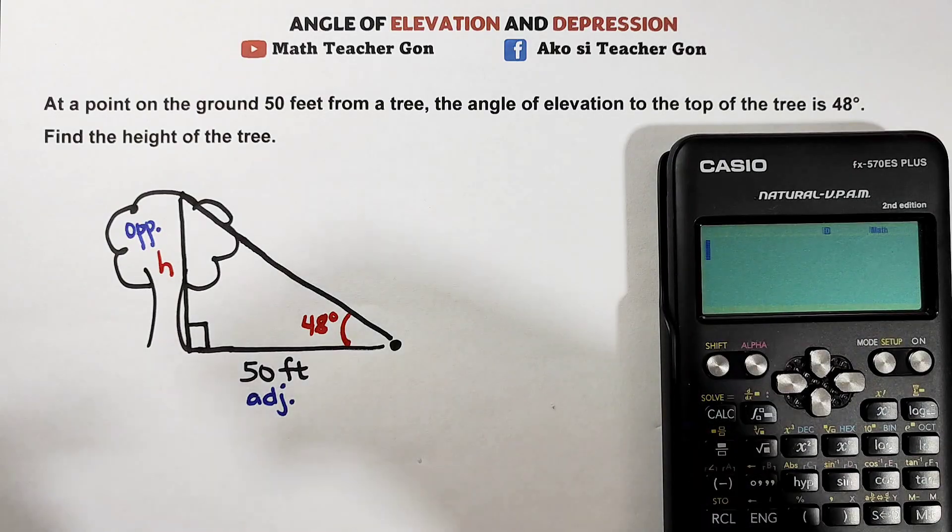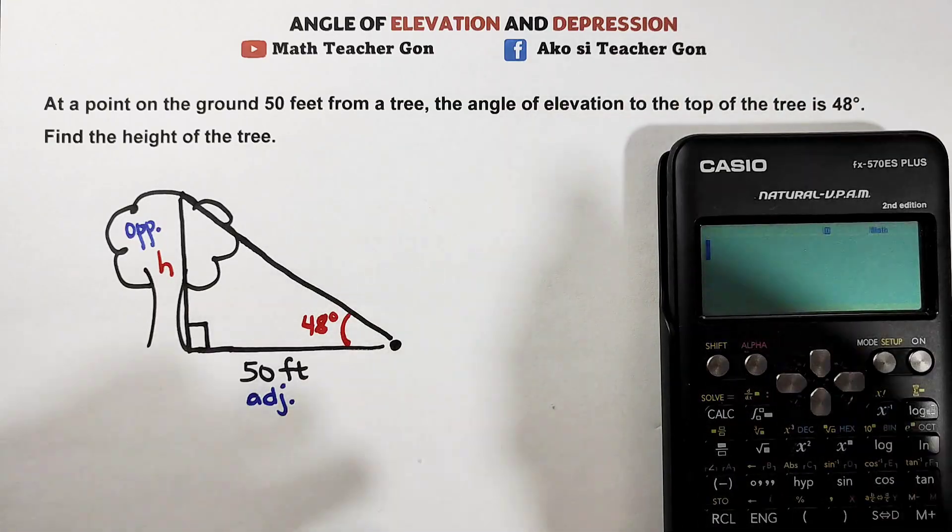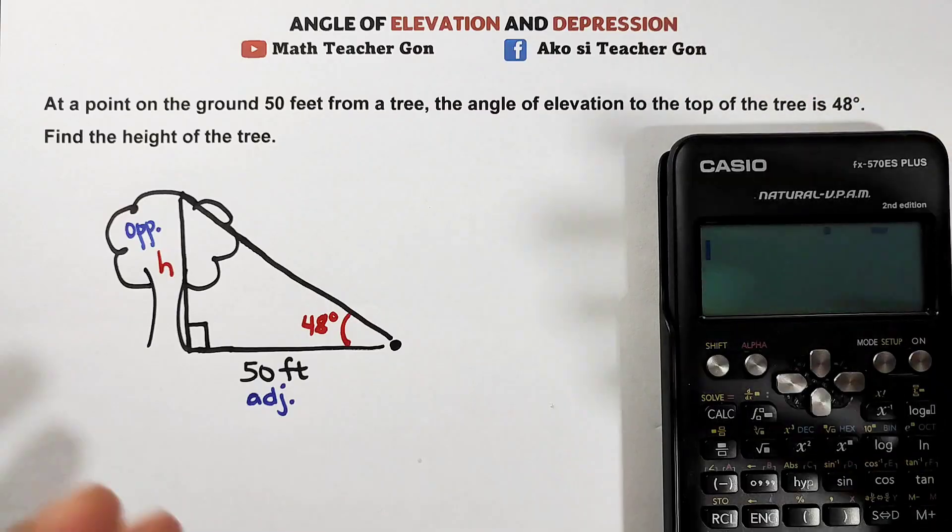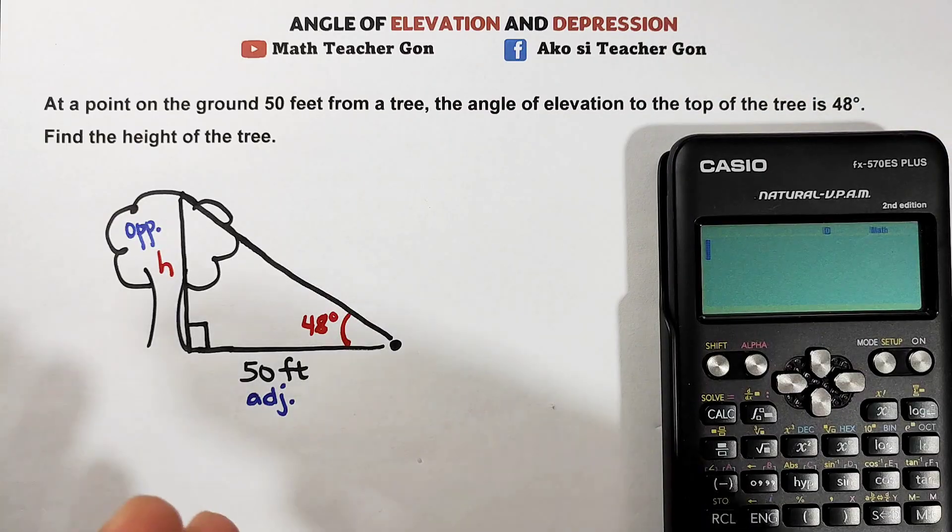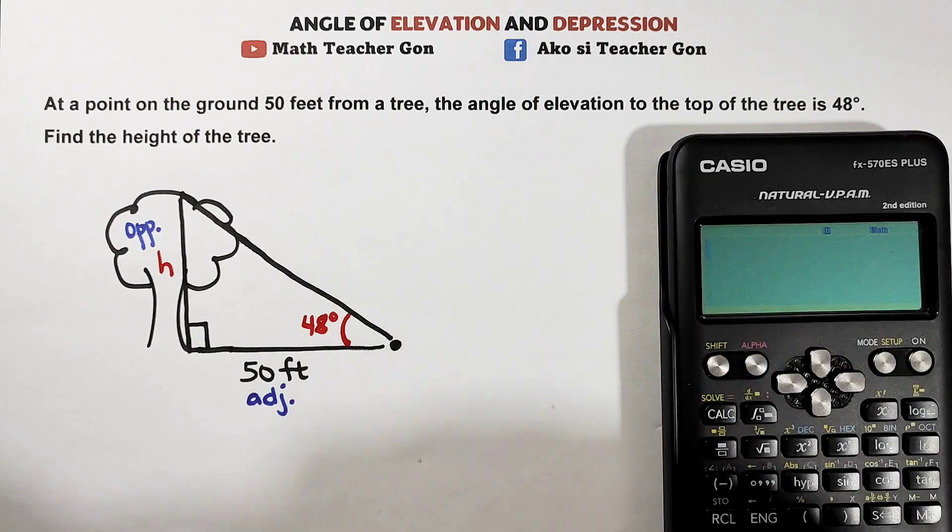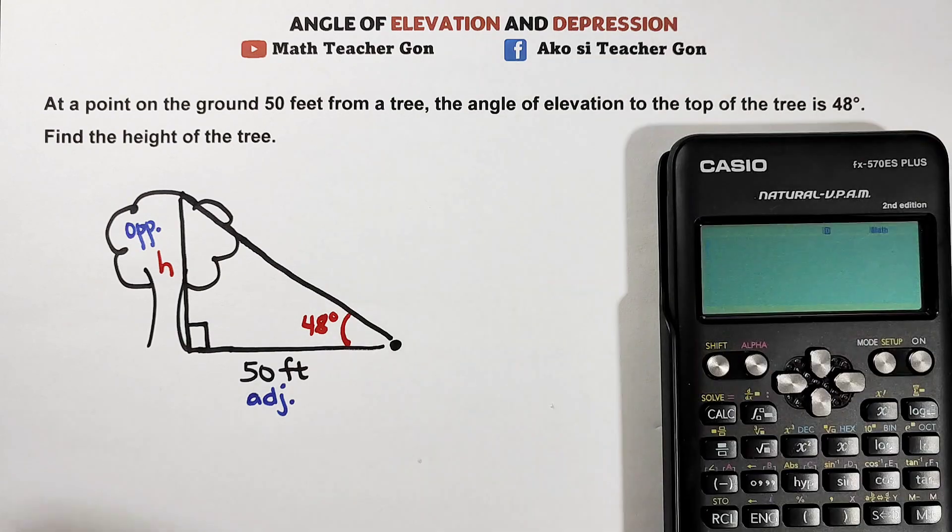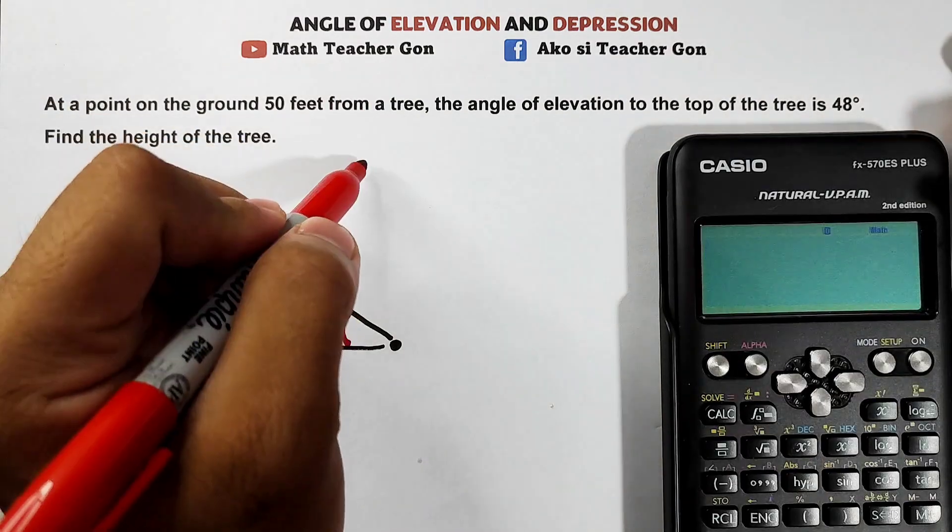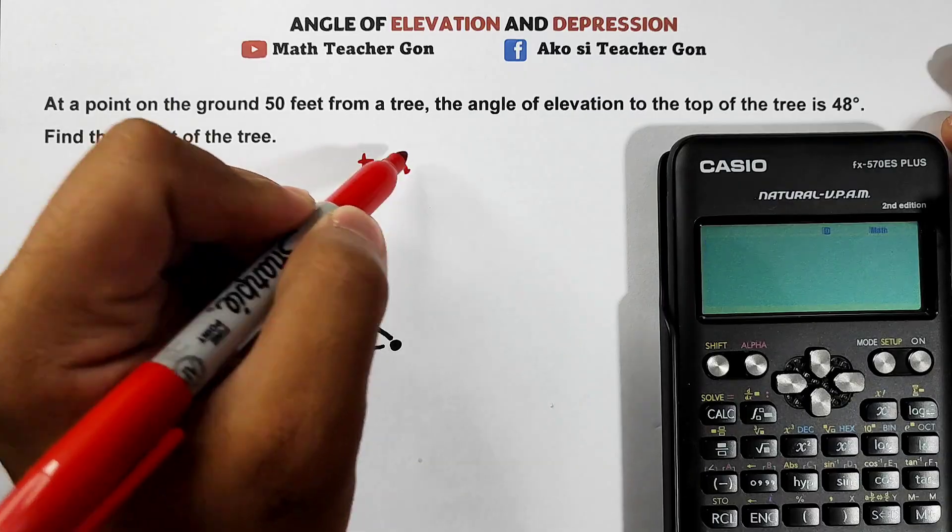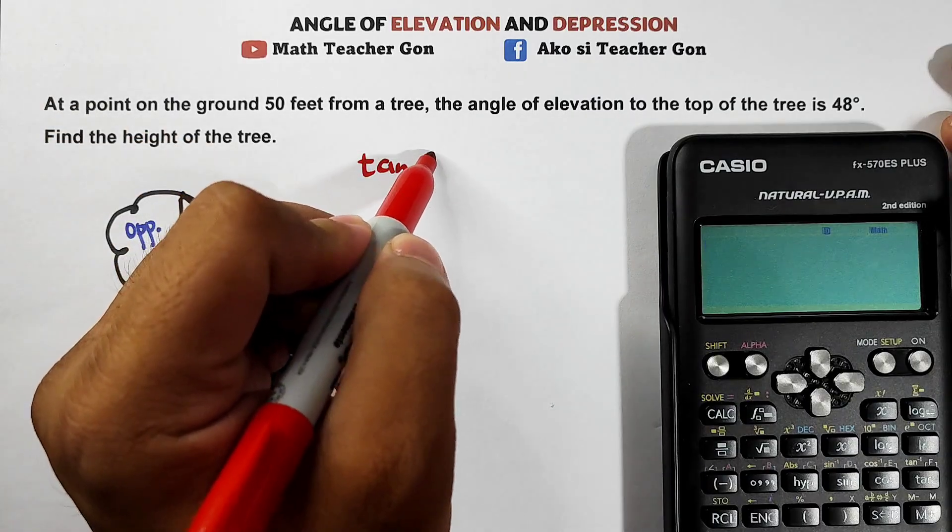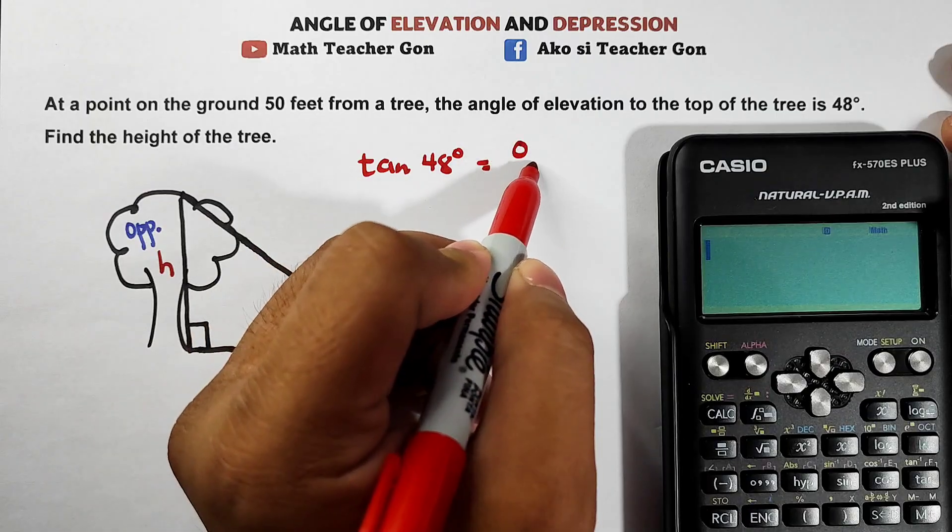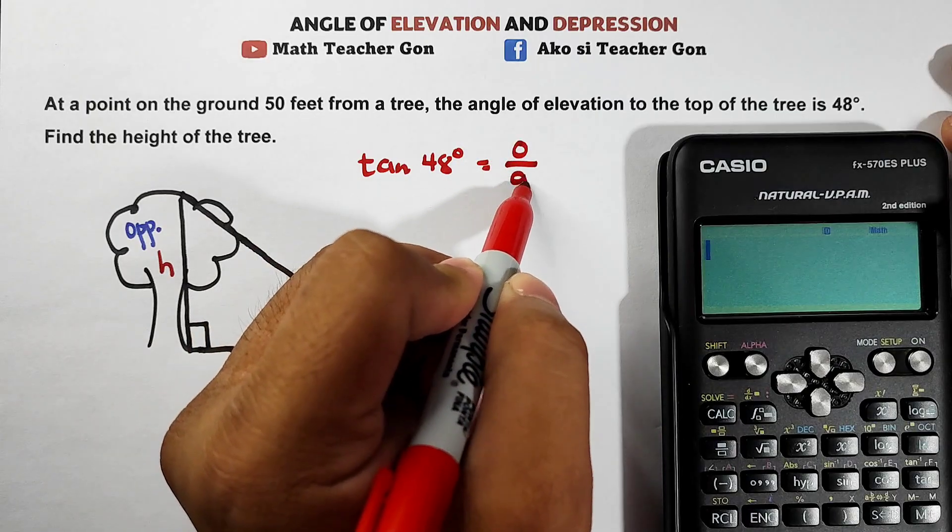And this 50 feet is what we call the adjacent side. So think about it now, your choices are only three: sine, cosine, and tangent. Between sine, cosine, and tangent, which one has adjacent and opposite? Very good. Definitely we will use tangent.